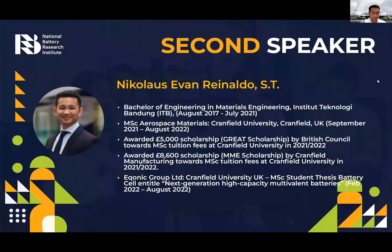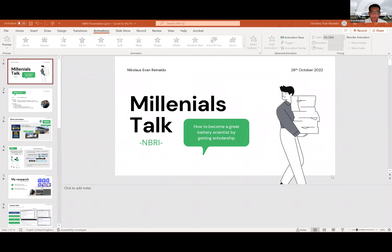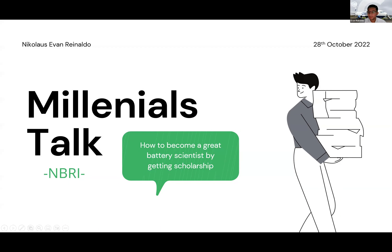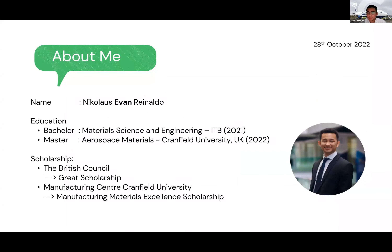Thank you for the introduction. Good morning everyone, good morning Professor Evie, Mr. Andika, and all participants — thank you for having me to give a talk about how to become a great materials scientist by getting a scholarship. My name is Nicolaus Evan Rinaldo, friends call me Evan. I got my bachelor's degree in material science and engineering at ITB, just graduated in 2021, then decided to continue to a master's degree in aerospace materials at Cranfield University UK. I just finished my thesis defense last month.